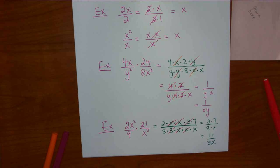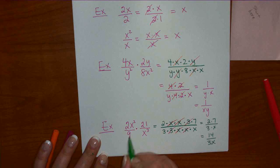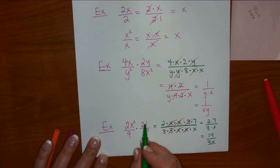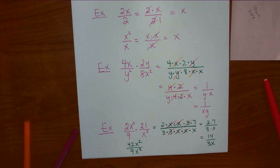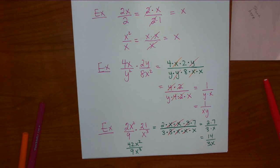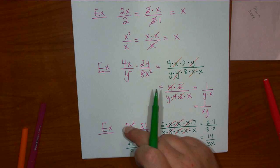Going back to what I said earlier: reducing is the same as multiplying. When multiplying fractions, it's easier to reduce first because the numbers are already factored. If you had multiplied 2x squared times 21 first, you'd get 42x squared over 9x cubed, and then you'd have to break 42 down — you've gone backwards. You don't want to multiply tops and bottoms to make the numbers bigger and then have to factor them again when they already started smaller.